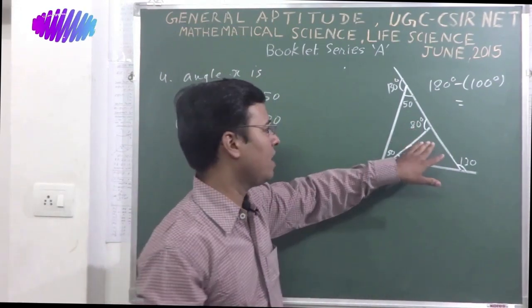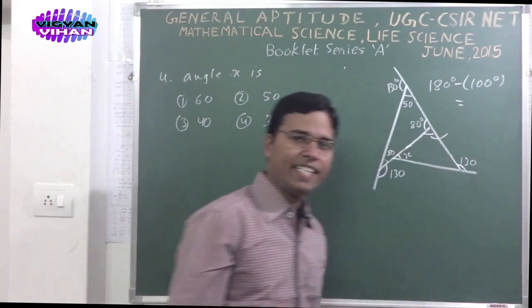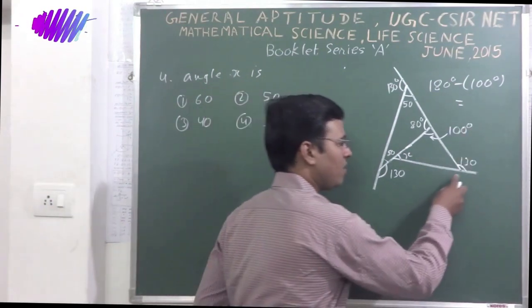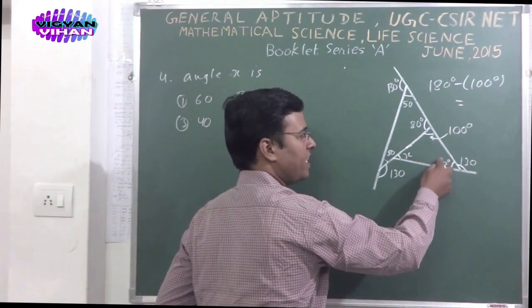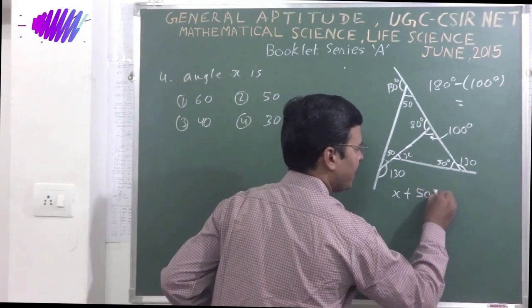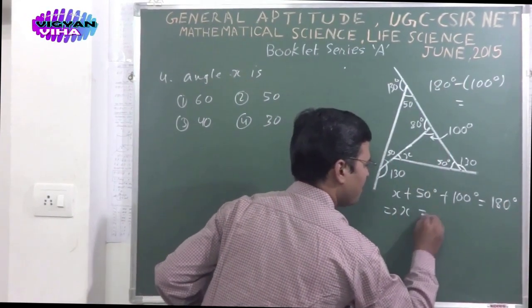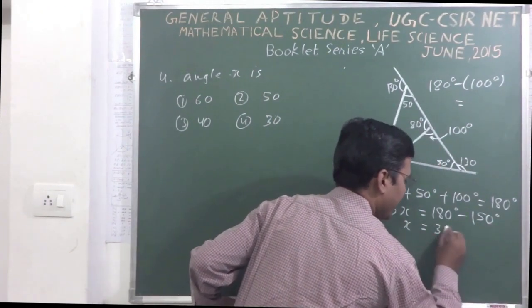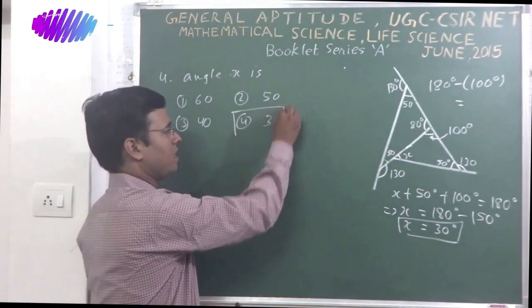Here also the outer angle is 130. The inner angle would be 50 degree. Then the addition of these 3 angles would be 180 degree. Then write here x plus 50 degree plus 100 degree, the answer would be 180 degree. Then x would be 180 degree minus 150 degree. Answer would be x is 30 degree angle. So the correct answer of this problem is option 4, 30.